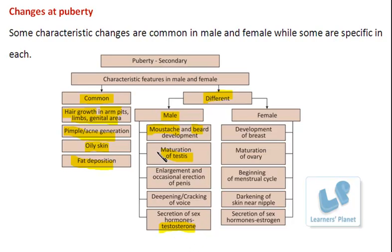During puberty, there is the enlargement and occasional erection of the penis in males. The penis is the male copulatory organ, and this organ shows enlargement. Occasionally, it is observed to become erect and ejaculate a liquid or fluid known as semen. This semen contains sperms, so at this age there is the production of sperms in males.